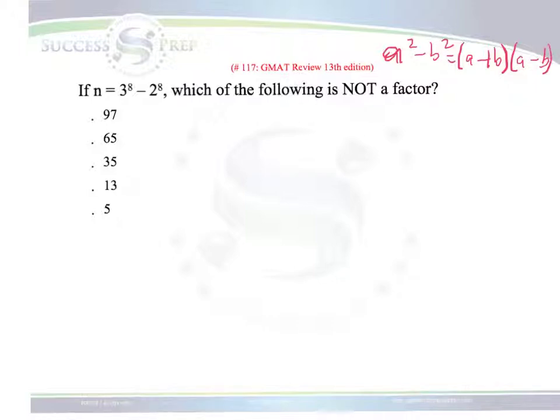So if we use that idea, we can come into this question and take a look at it and rewrite the n as 3 to the 4 with a square outside and 2 to the 4 with a square outside.